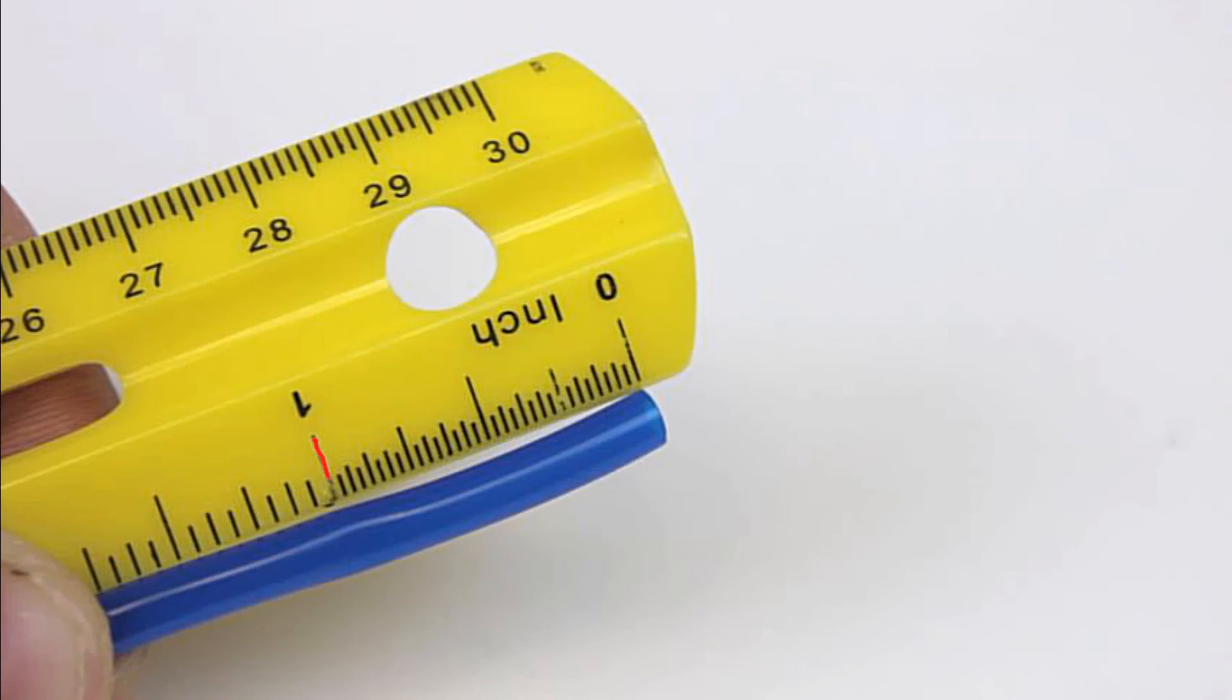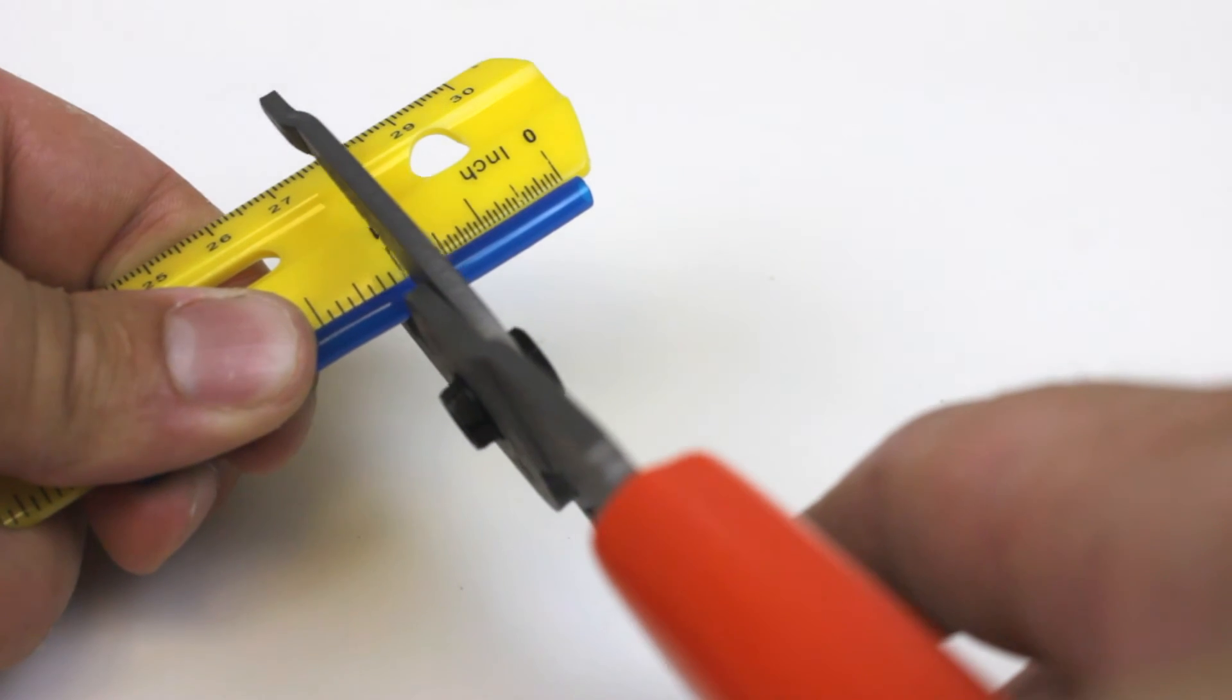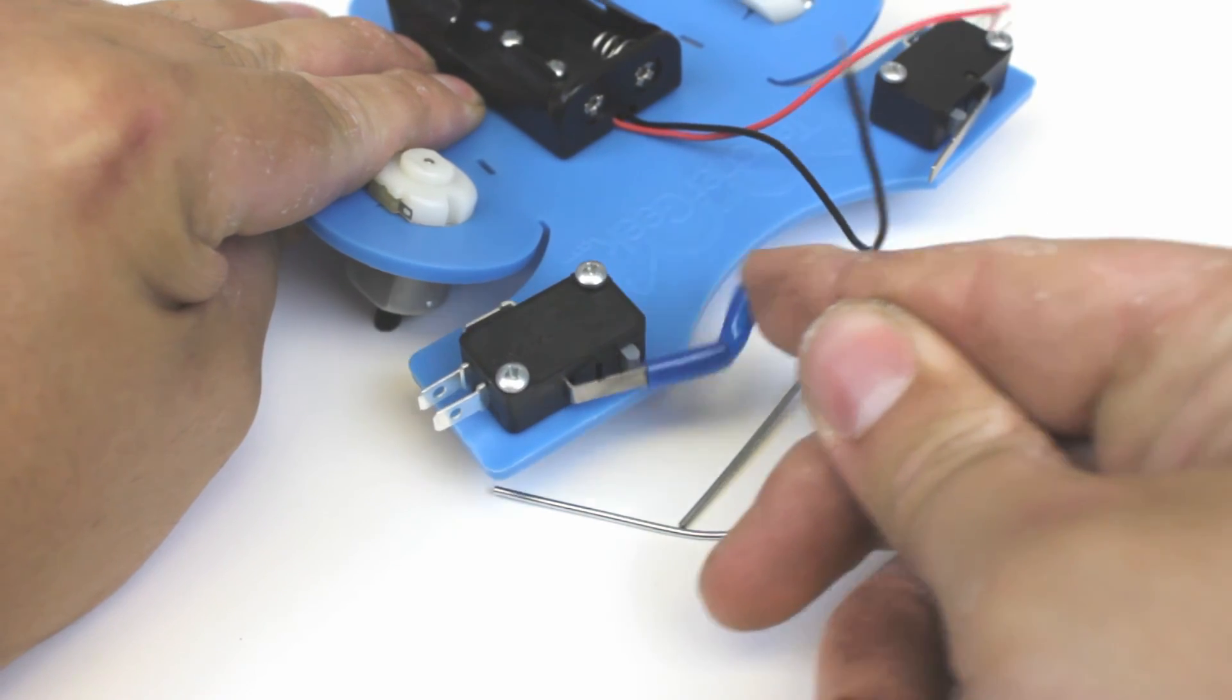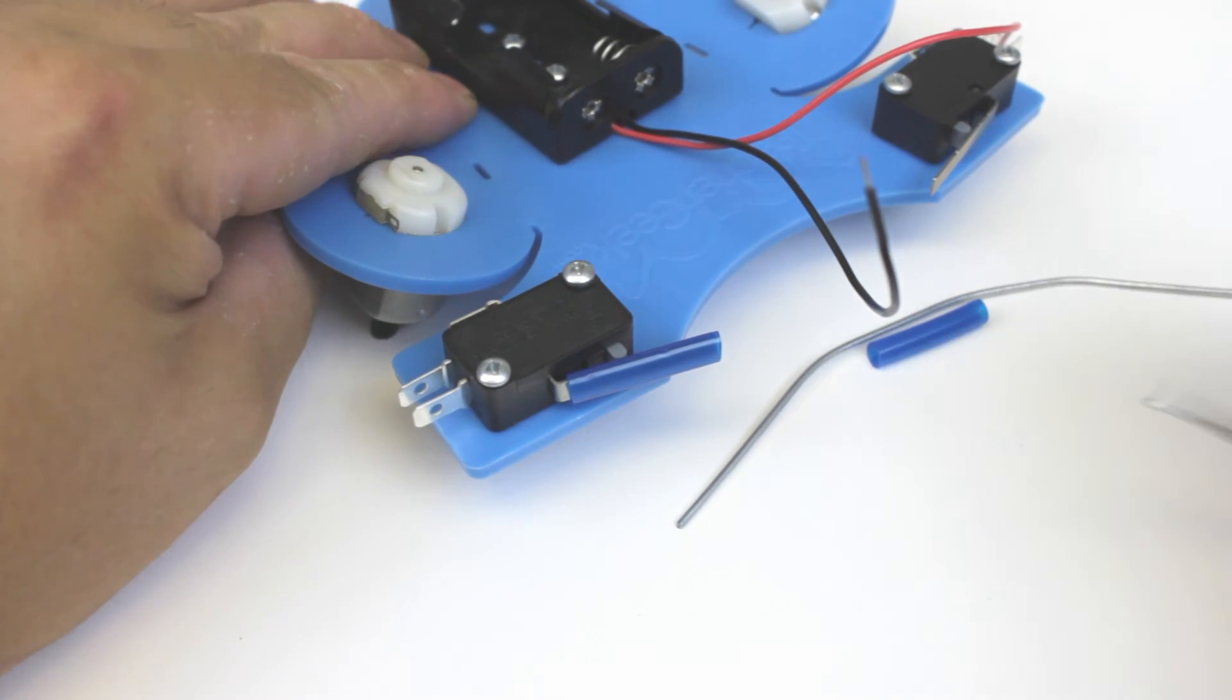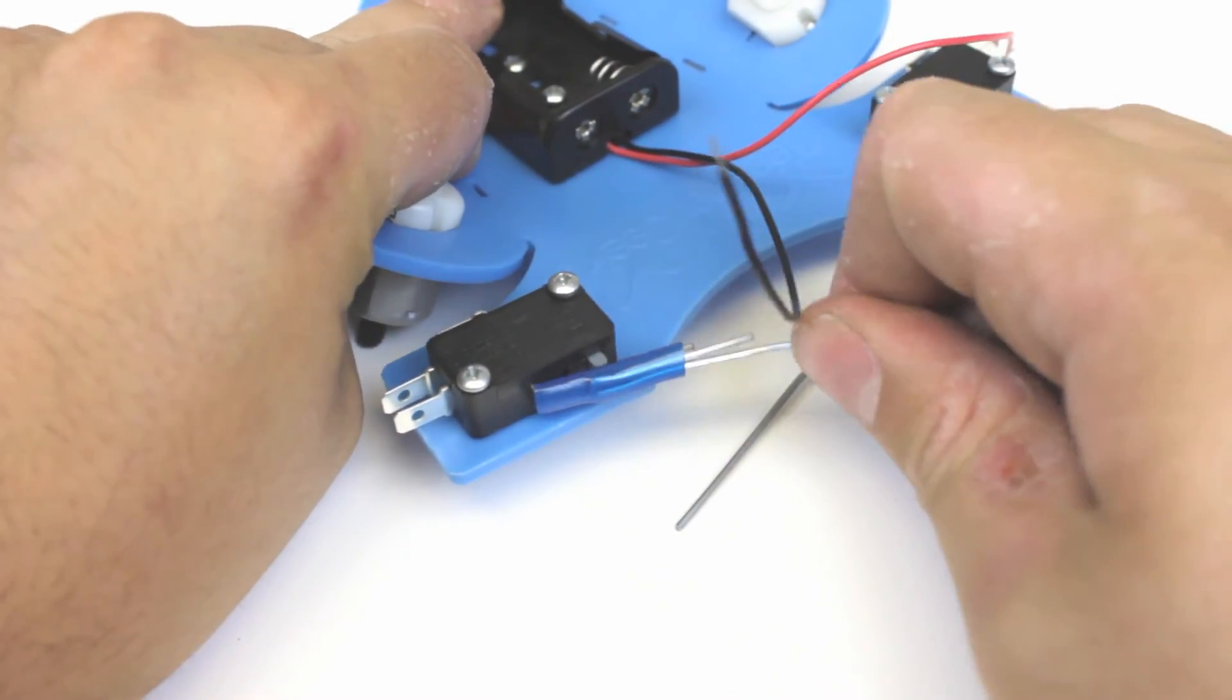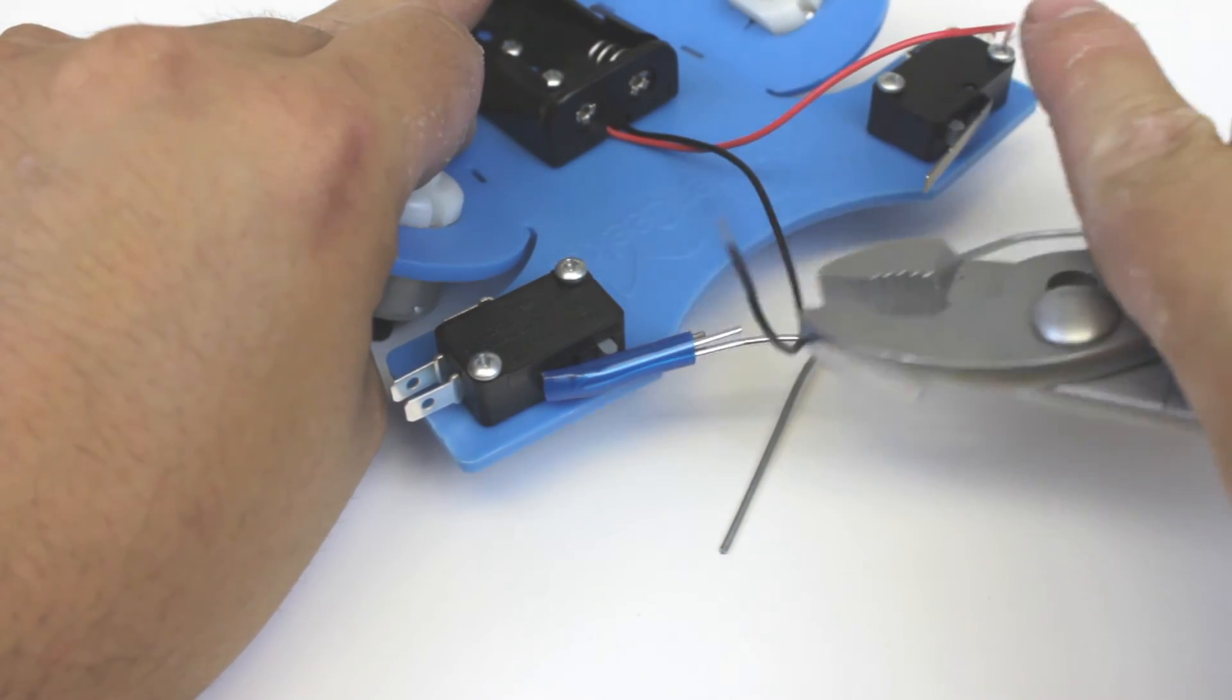Take the blue bug tubing provided and cut two 1 inch sections which is about 2.5 cm. Slide a piece of the blue tubing onto the switch lever. Grab one of your feelers and slide it into the blue tubing. If it's a little tough to push you can just go and grab a pair of pliers and easily push it down the rest of the way.